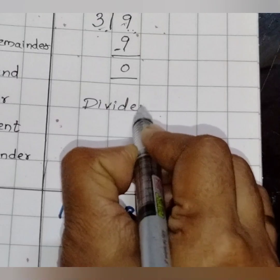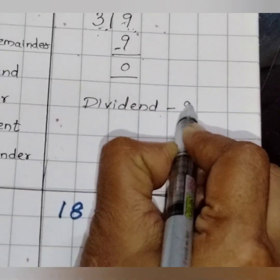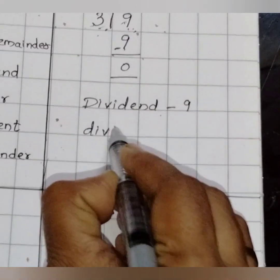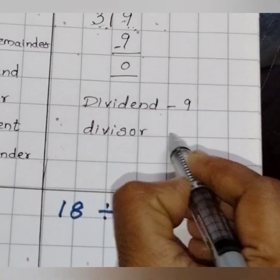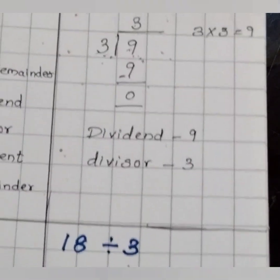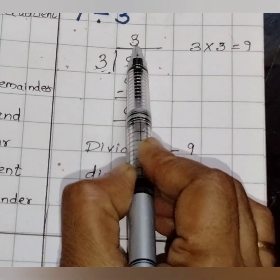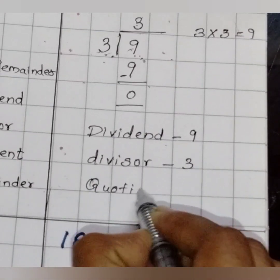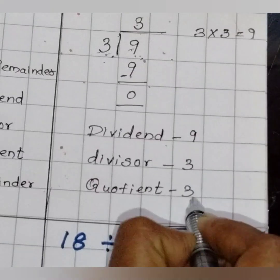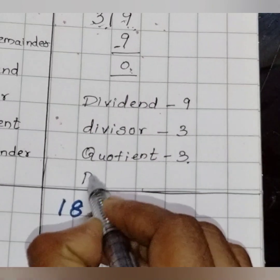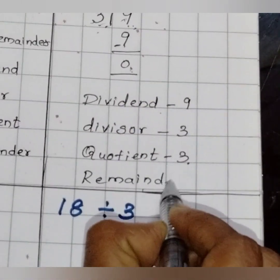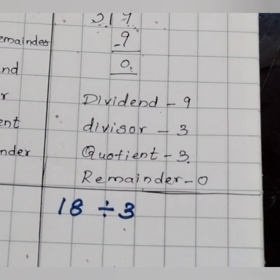Let me write everything. The dividend is 9, the divisor is 3, the quotient is also 3, and the remainder is 0. I am saying this repeatedly because you should not forget the names.